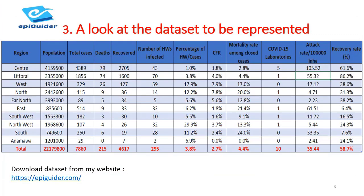Now that we have our software installed, let's take a look at the dataset we will be representing on the map. The data displayed is cumulative data for Cameroon from the beginning of the COVID-19 outbreak on March 6th, 2020 up to the 6th of June 2020. We have the data stratified by the 10 regions that make up the country. Let's look at the variables displayed.